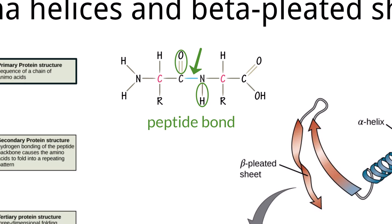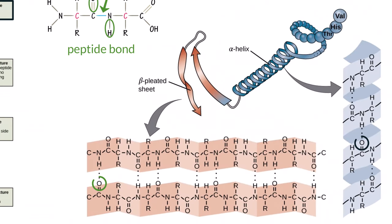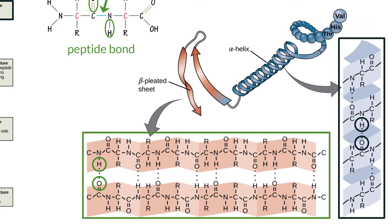Both of these hydrogen and oxygen atoms are polar. And when the primary structure of a protein is created, these atoms can interact via the formation of hydrogen bonds. This results in the oxygen of one amino acid being attracted to the hydrogen of another amino acid somewhere else along the same chain. And if this happens to a lot of them, certain structures can be created that are relatively strong.